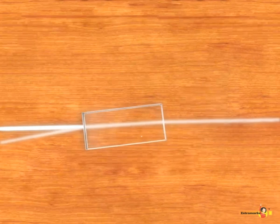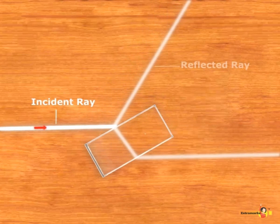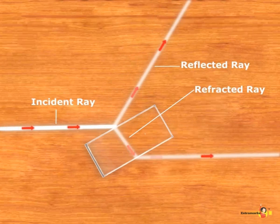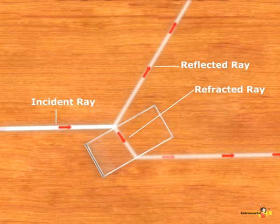When a ray of light passes through a glass slab having parallel faces, some of the light gets reflected and rest passes into the glass. Light bends in one direction as it enters the block and another as it leaves the block. This shift in direction is called the refraction of light.